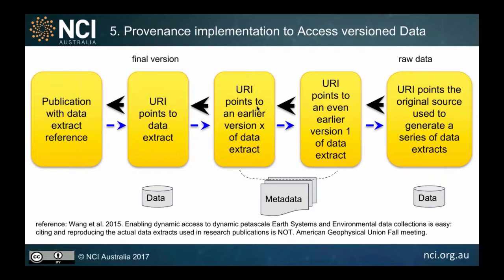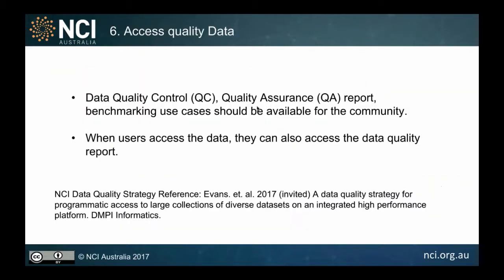The last two points are data versioning and data quality. Because of the scale of our data, we cannot store every single processing step. So we store the raw data and the final version, and keep the URI of the metadata for intermediate steps, preserving provenance information while saving storage. On data quality, some users note we can't assume data is flawless, so by publishing data alongside a quality report, we provide access with a certain assurance. A publication on this is coming soon.